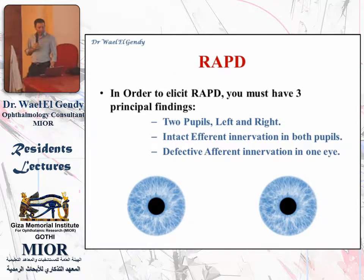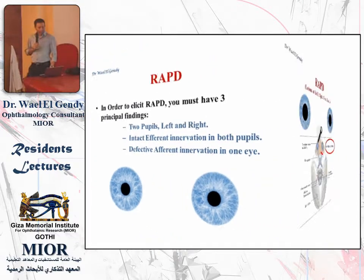In order to have a relative afferent pupillary defect, you must have three things: you must have two pupils, left and right, so you can compare between them; you have to have intact afferent innervation for both pupils; and you have to have a defective afferent innervation — meaning an afferent pupillary defect — in one eye.